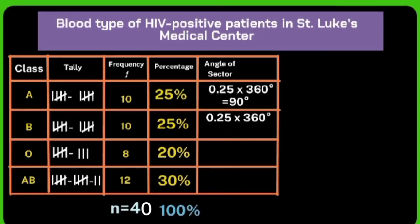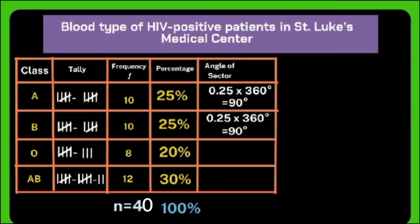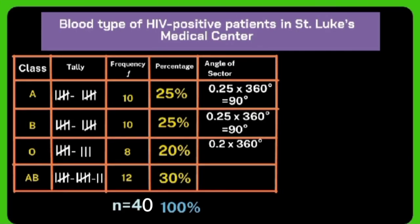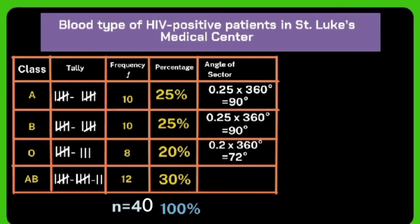For class O: 8 ÷ 40 = 0.2 × 360° = 72°. For class AB: 12 ÷ 40 = 0.3 × 360° = 108°. We also make sure that all the angle sectors add up to 360 degrees as a final check.